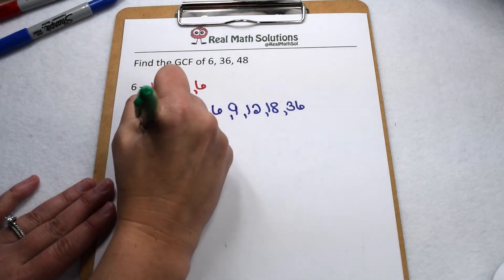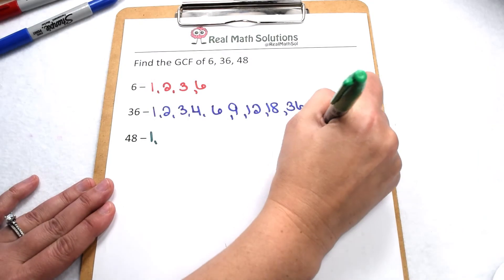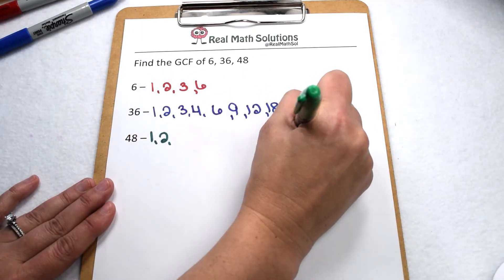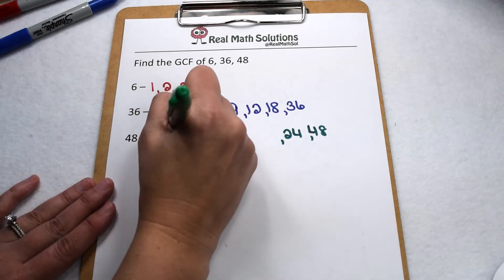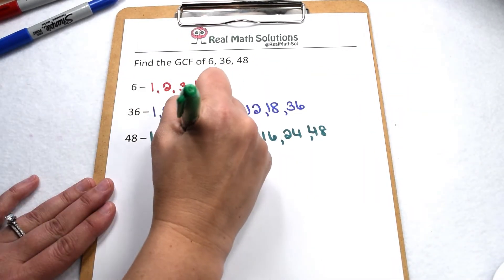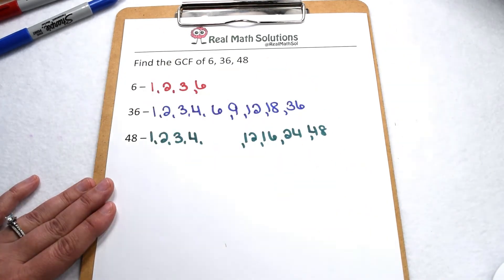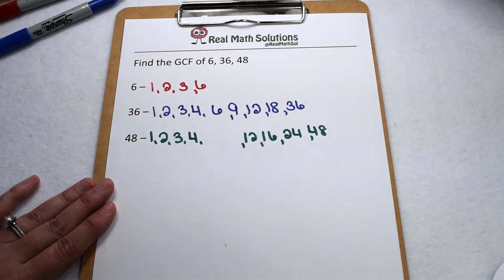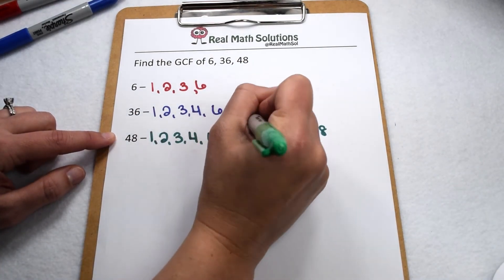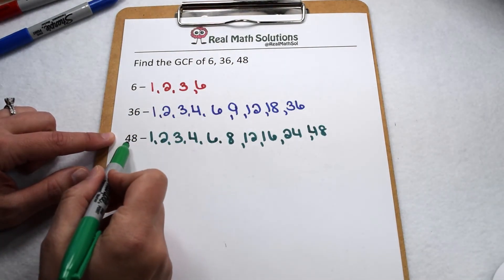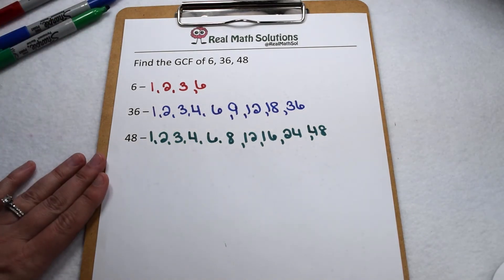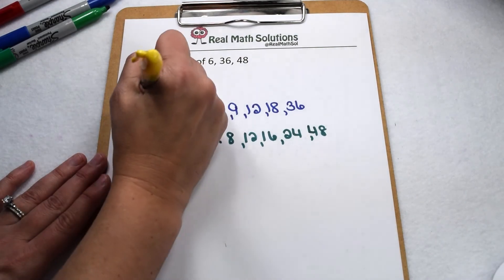For factors of 48, we have 1 and 48. It's even, so our list is going to include 2 and 24. 48 is divisible by 3, so our list is going to include 3 and 16. It's also divisible by 4, so we'll include 4 and 12. From there, 48 is not divisible by 5, but it is divisible by 6, so our list includes 6 and 8. Since 48 is not divisible by 7, we know we've met in the middle, and that includes all of them.